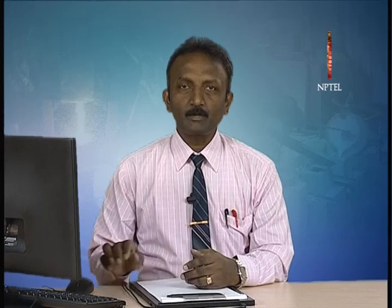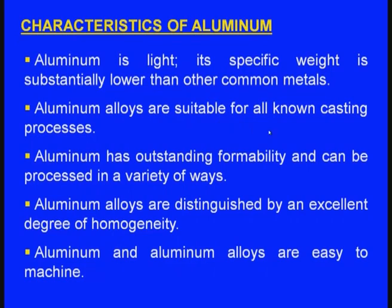First let us see the characteristics of aluminum. Aluminum is light in weight; its specific weight is substantially lower than other common metals. Aluminum alloys are suitable for all known casting processes — sand casting, die casting, investment casting — aluminum can be used for all casting processes.